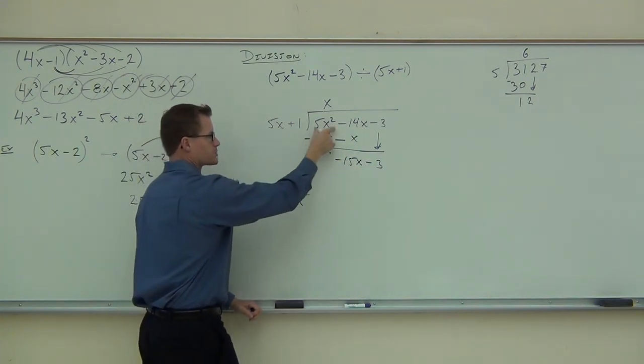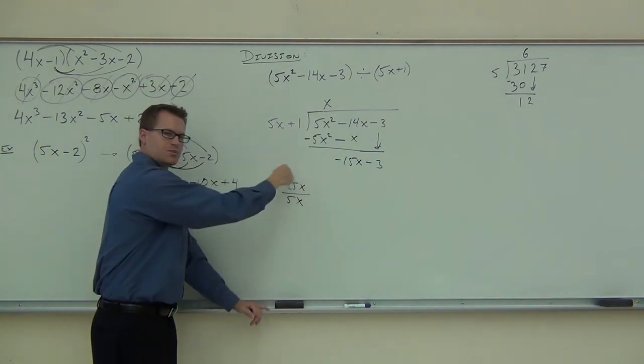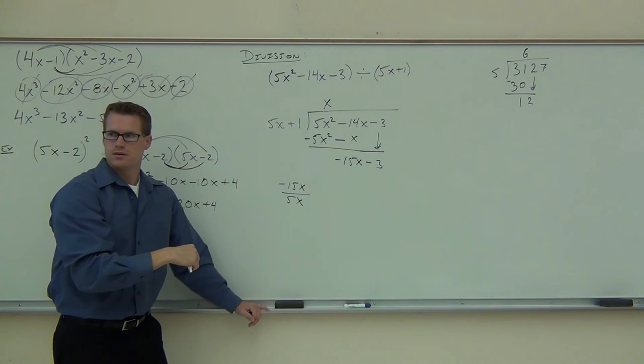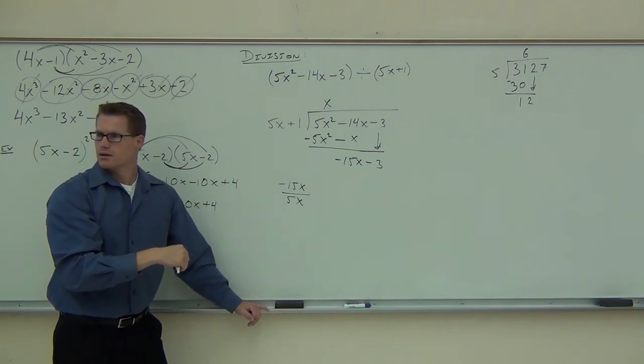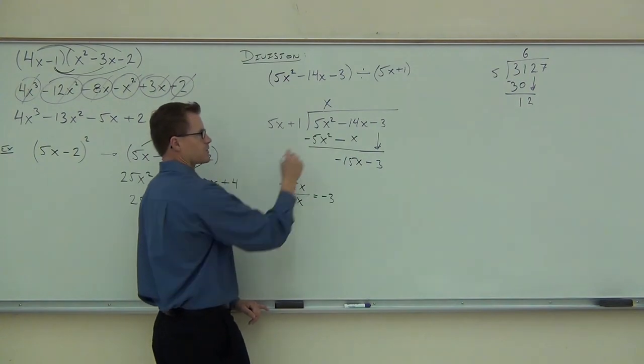So first term divided by first term. Just like earlier, we did first term divided by first term. That's the whole process. Does this one simplify? Sure. How much do you get out of that? And you know what? That negative 3 is what we're going to put right here. I'll write in purple for you.